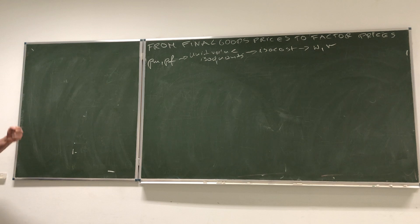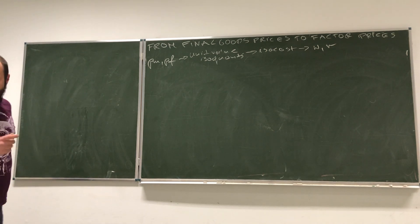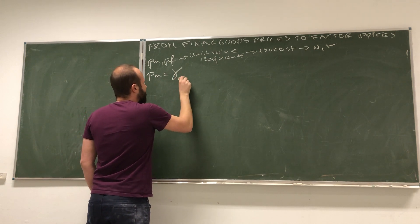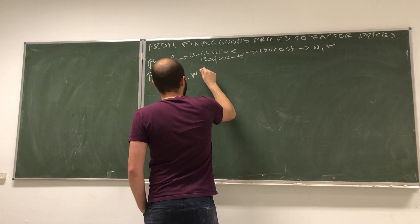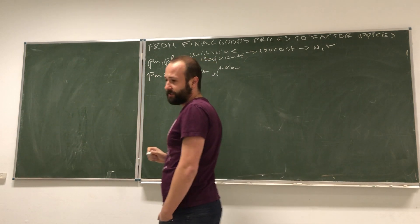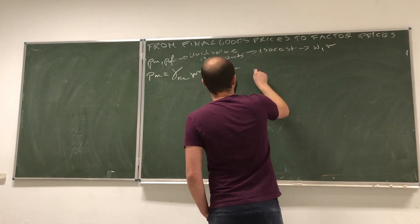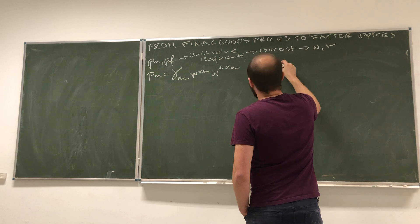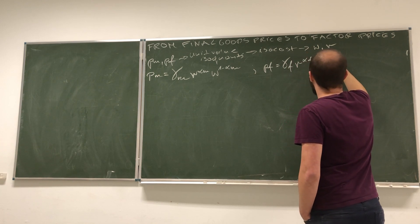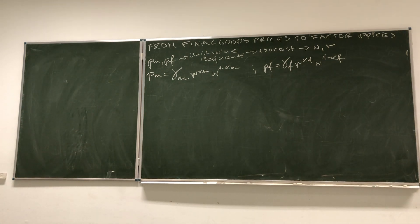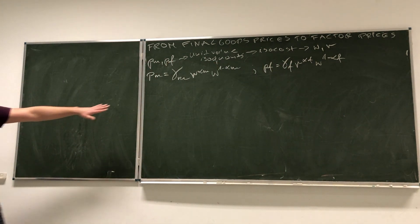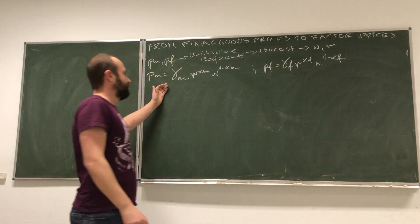Let's start with what we had previously. We established that the price of manufacturers can be expressed as: gamma_m times r to the power alpha_m times w to the power negative (1 minus alpha_m). By the same token, we expressed the price of food as gamma_f times r to the power alpha_f times w to the power negative alpha_f. Now that we have those two, we can solve both equations for rent and equalize them.